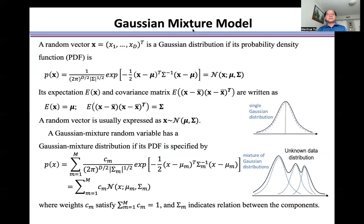A random vector x is a Gaussian distribution if its probability density function is expressed as this formulation.